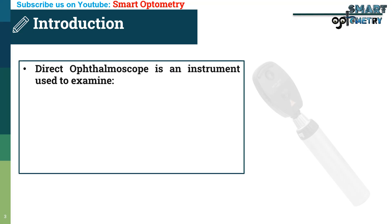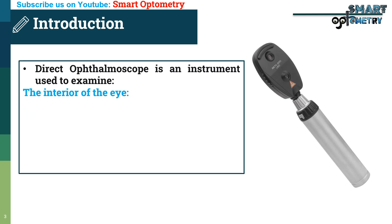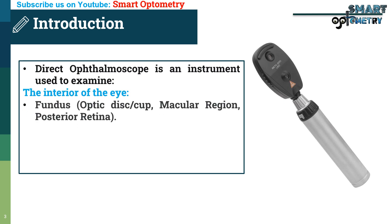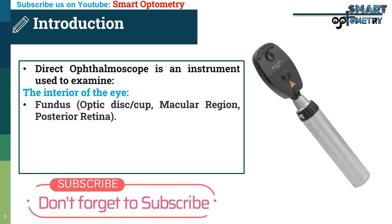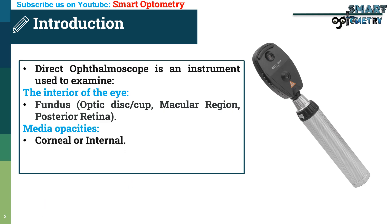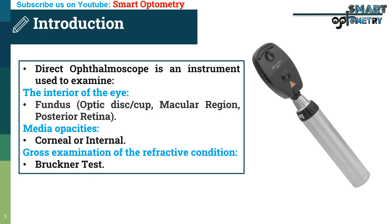The direct ophthalmoscope is an instrument used to examine the interior of the eye, i.e. the fundus, which includes the optic disc, optic cup, macular region, and part of the posterior retina. It also allows examination of media opacities — we can identify corneal or internal opacities. Additionally, gross examination of refractive condition is possible; we can perform the Bruckner test, which gives a rough estimation of the refractive status of the eye.